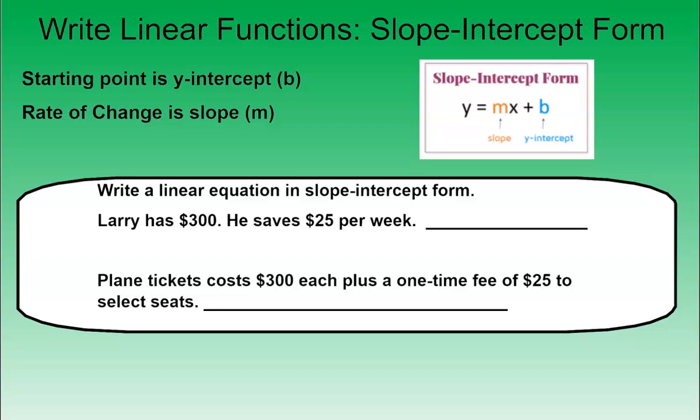So first example, Larry has $300, so that's what he's starting with. So this would be our b. He saves $25 per week. So this would be our slope, or our rate of change. So our rate of change is $25 per week. So this would be our m.